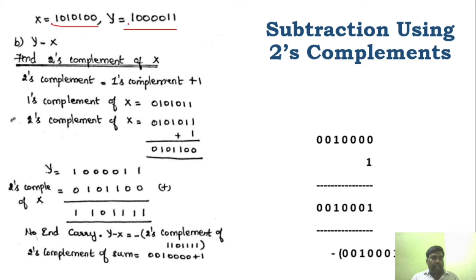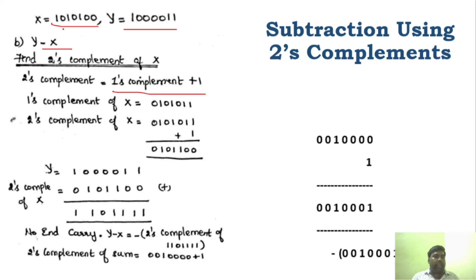Now for Y minus X. The first step is the same. We need to find the 2's complement of X. First, find the 1's complement of X: 0, 1, 0, 1, 1, 0, 1, 1. Then add 1 to get the 2's complement of X.